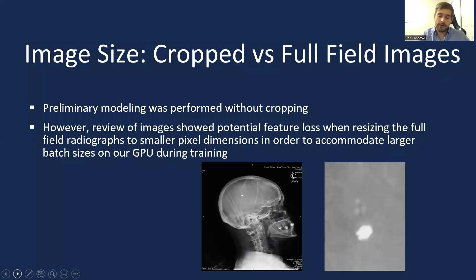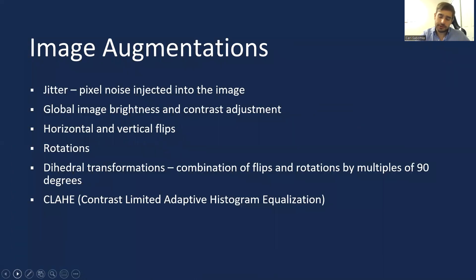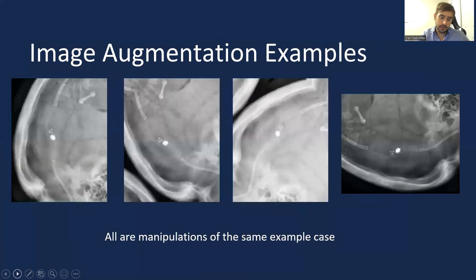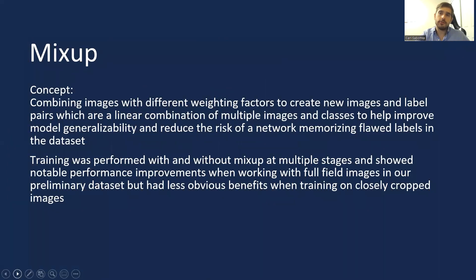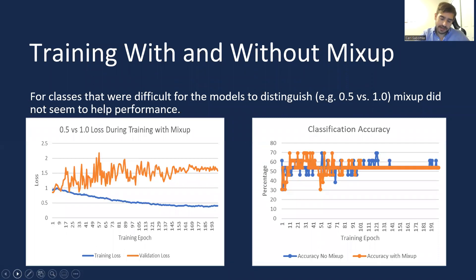We investigated both the complete radiograph field of view and cropped images as model inputs. Class activation maps, as seen here, were used to assess the reasonableness of the model predictions. Extensive image augmentation was used to counterbalance the very small dataset size. We also used an additional strategy called mix-up, which involves combining images with different weights linearly and has been discussed in the AI literature as improving performance by creating a different curvature for the optimization. However, we did not see significant benefit from using mix-up during our model training.